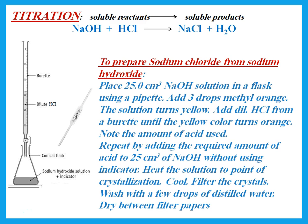We repeat by adding the required amount of acid to 25 cm³ of sodium hydroxide without using an indicator. Then heat the solution to the point of crystallization, cool to form crystals, filter the crystals, wash with a few drops of distilled water, and dry between filter papers. This gives pure dry crystals of sodium chloride.